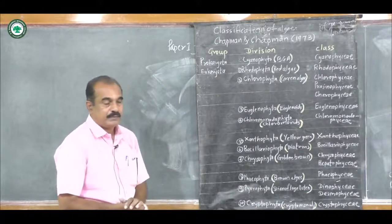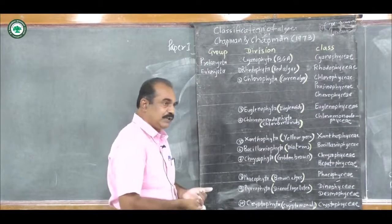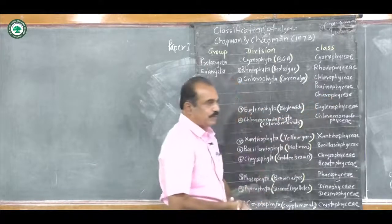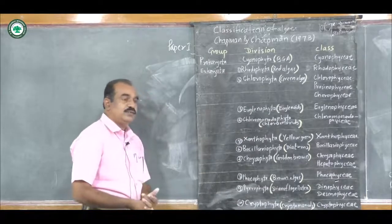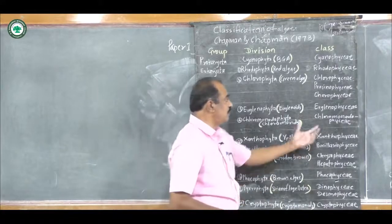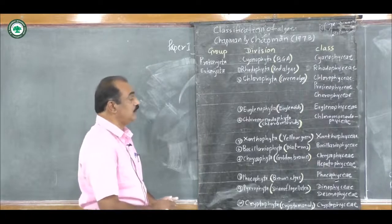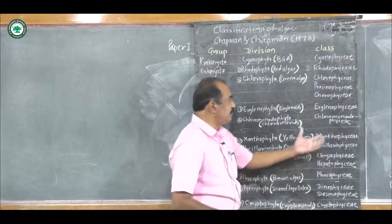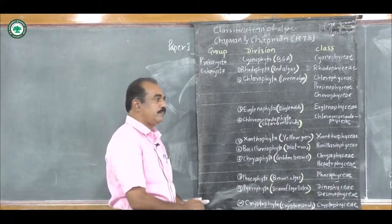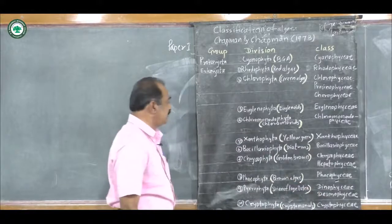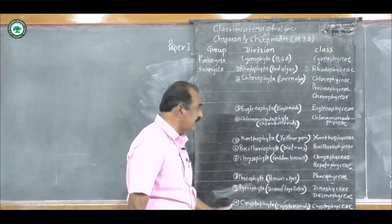Third division is Euglenophyta, with only one class, Euglenophyceae. Fourth division is Chloromonadophyta — these algae are called chloromonads — with only one class: Chloromonadophyceae. Fifth division is Xanthophyta, also called yellow-green algae based on color, with only one class: Xanthophyceae. Sixth division is Bacillariophyta — all the diatoms are included in this division — with only one class: Bacillariophyceae.